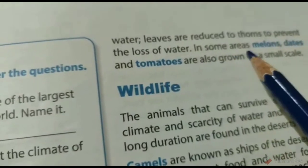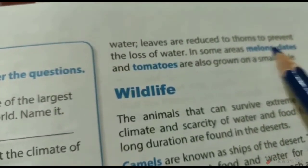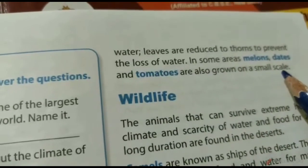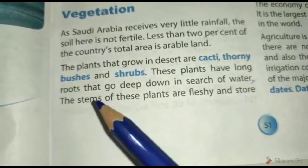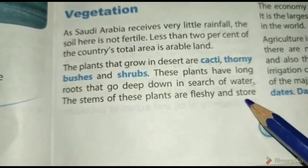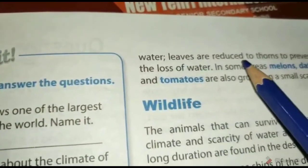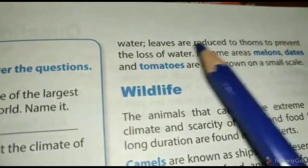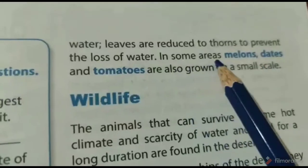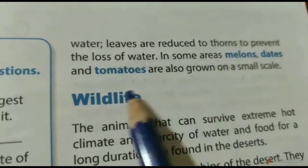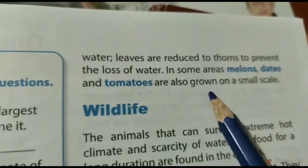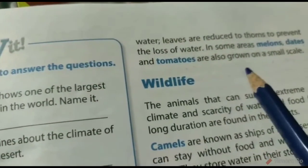In some areas, melons, dates and tomatoes are also grown on a small scale. इन plants की stems मोटी होती हैं जिससे कि पानी को उसमें store किया जा सके। पत्तियों में कांटों को कम किया जाता है जिससे कि पानी की हानि को रोका जा सके। कुछ क्षेत्रों में खरबूजे, खजूर और टमाटर छोटे पैमाने पर उगाए जाते हैं। That's all for today children.